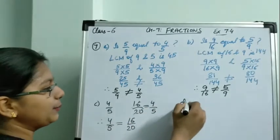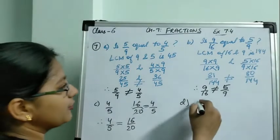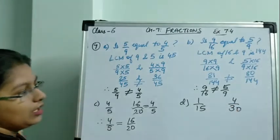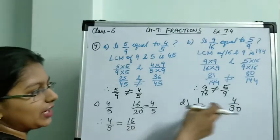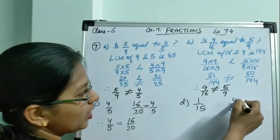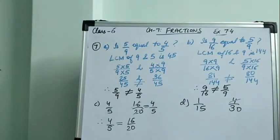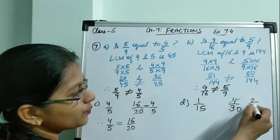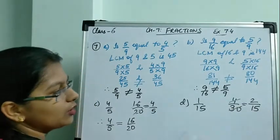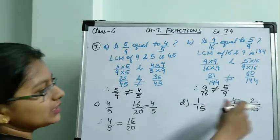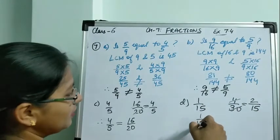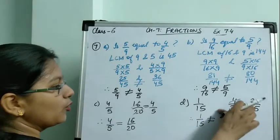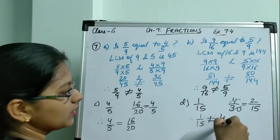Similarly, in Part D: is 1 by 15 equal to 4 by 30? The fraction 1 by 15 cannot be simplified, but 4 by 30 can be simplified. Both 4 and 30 are divisible by 2: two 2s are 4 and two 15s are 30. So this becomes 2 by 15. Now we have 1 by 15 and 2 by 15, so we can say 1 by 15 is not equal to 4 by 30.